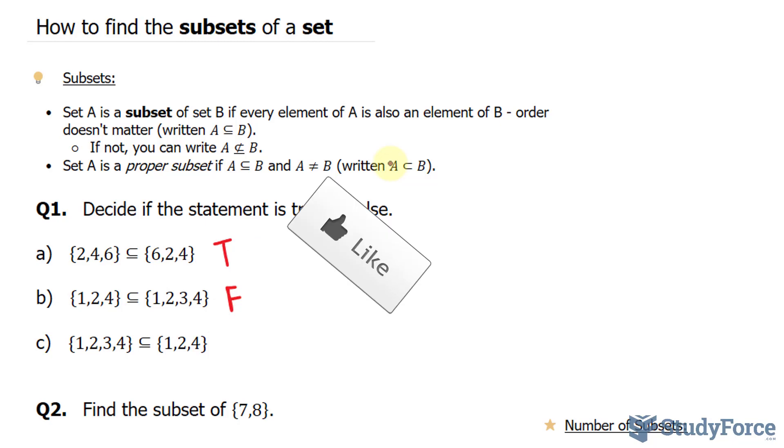Question C, we have 1, 2, 3, 4 in the first set and 1, 2, 4 in the second. This statement is completely false due to the simple fact that this contains more elements than the other. So we can cross out this symbol.